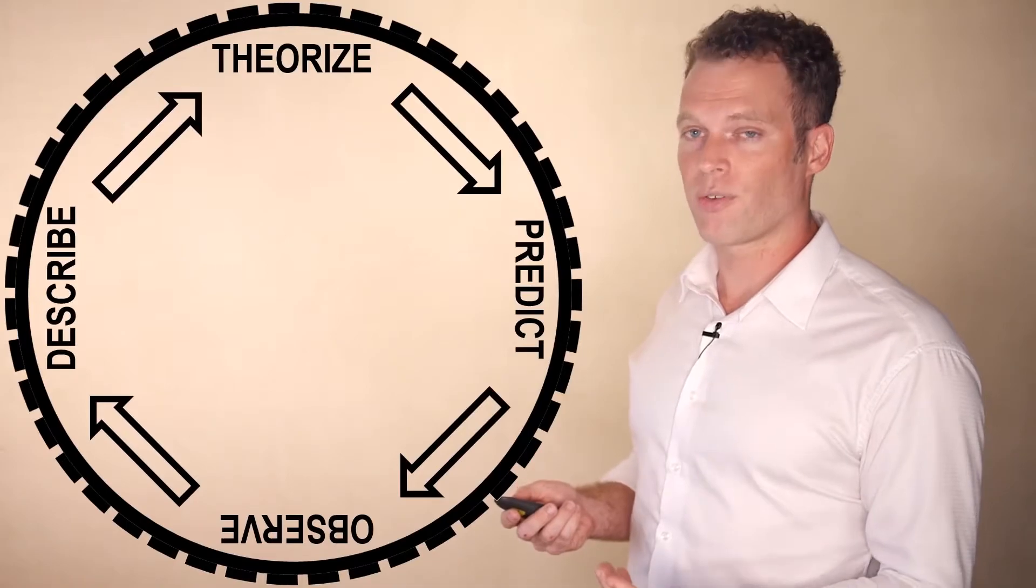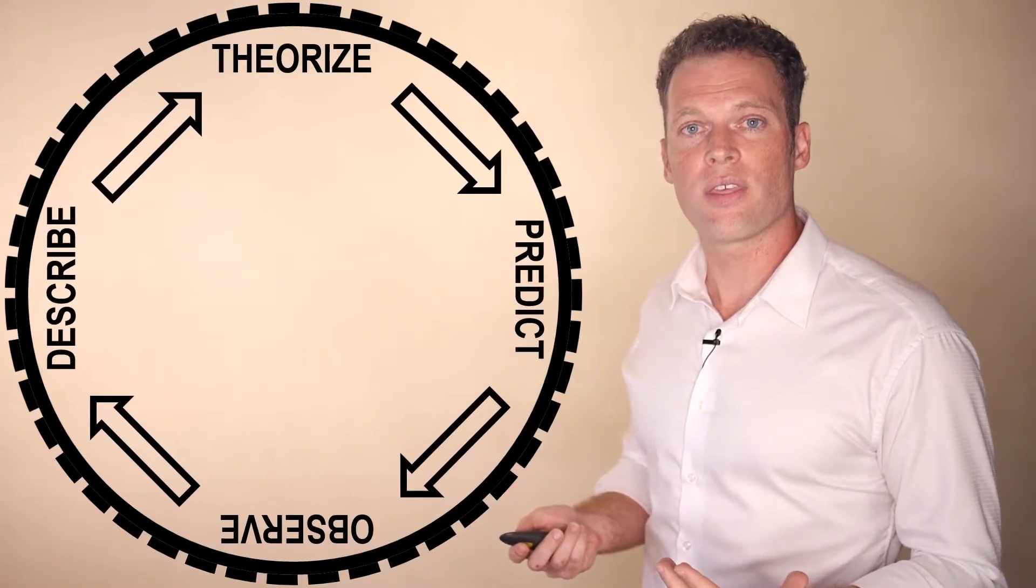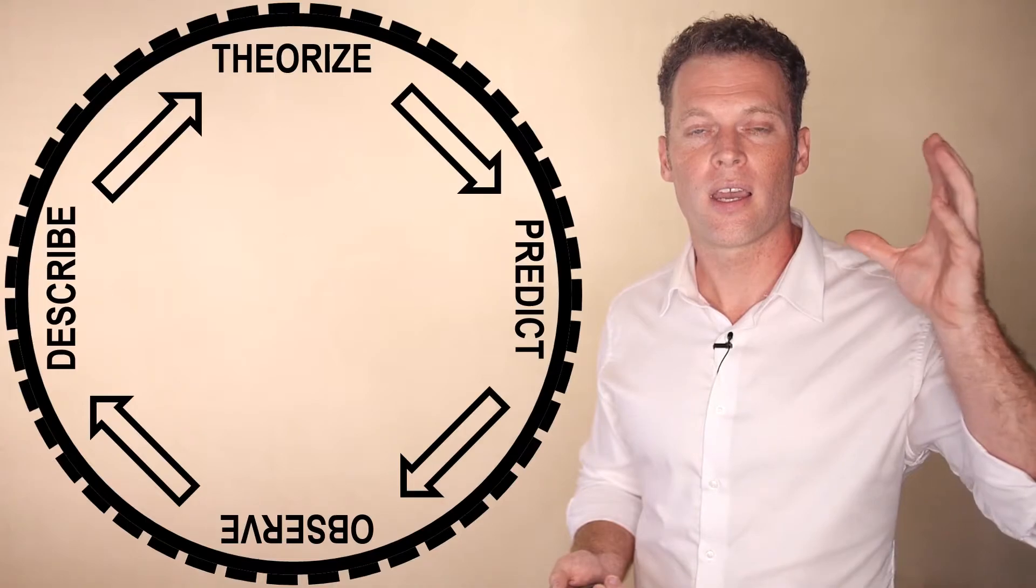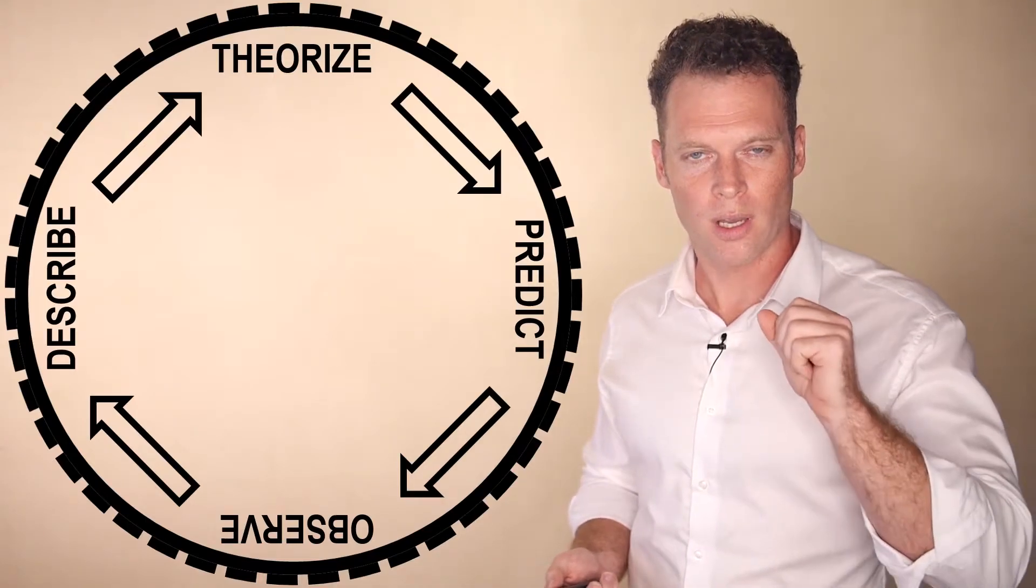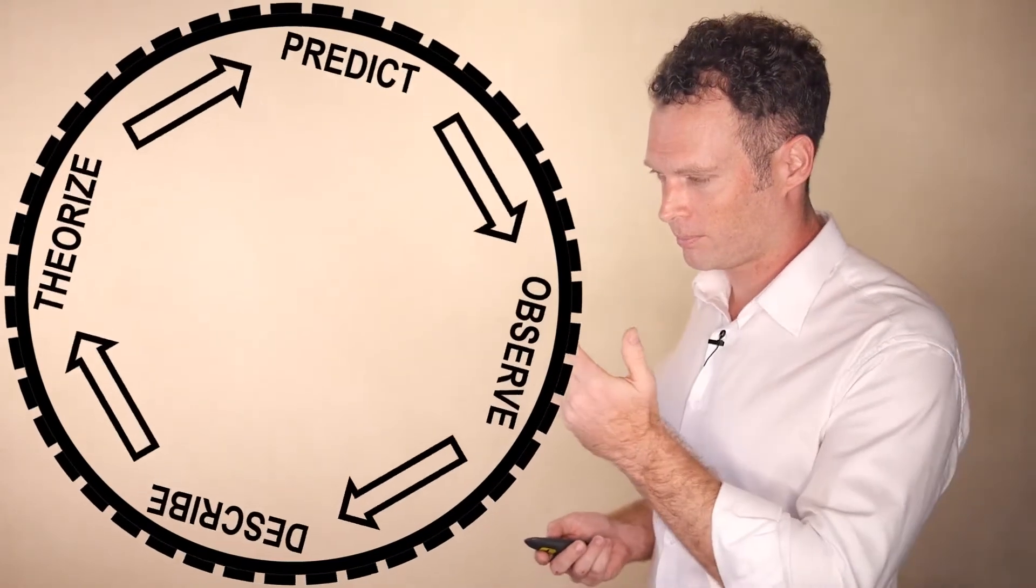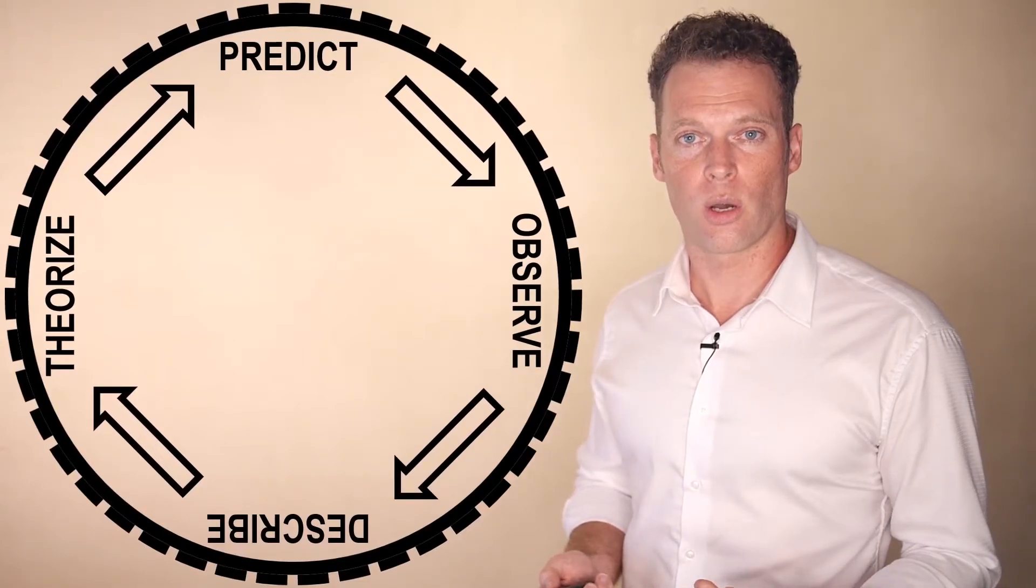So observations are described. Those lead to theories. Theories are the basis of making new predictions about unobserved phenomena. And this cycle goes on and on.